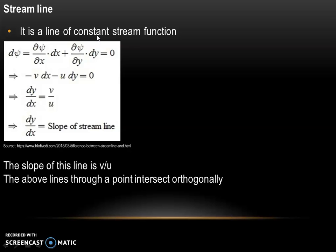A streamline is a line of constant stream function. We can write dψ = (∂ψ/∂x)dx + (∂ψ/∂y)dy = 0. Since ∂ψ/∂x = -v and ∂ψ/∂y = u, we get dy/dx = v/u, which is the slope of the streamline.